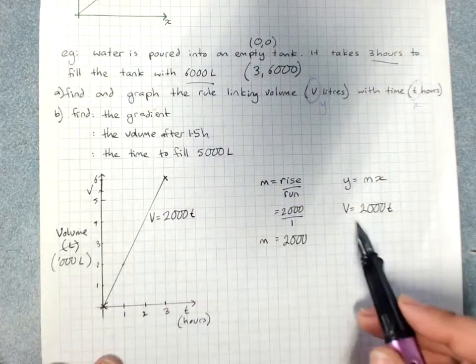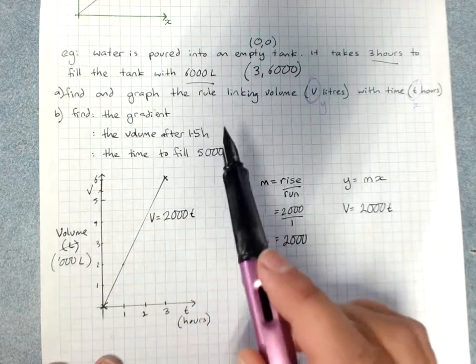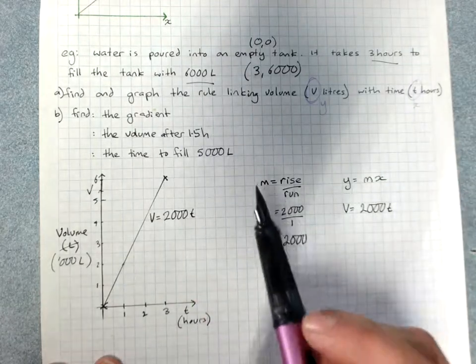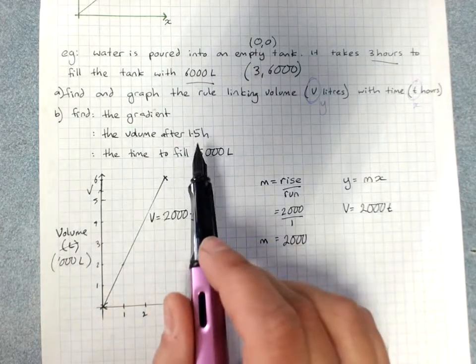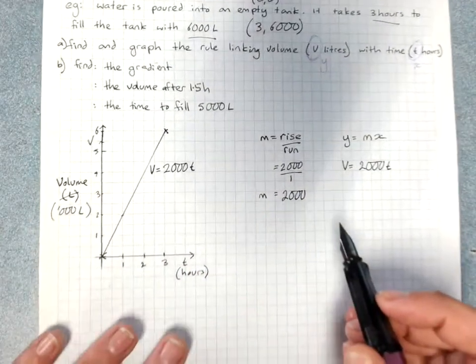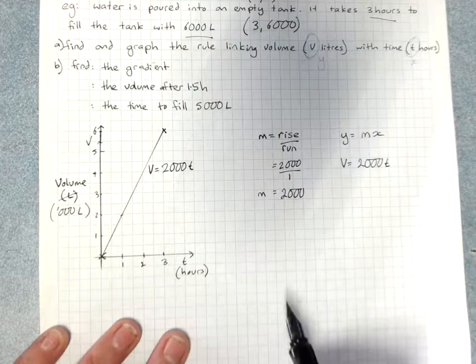The rate of change, therefore, is 2,000 liters per hour. Sorry about my phone buzzing there. Find the volume after 1.5 hours and the time to fill 5,000 liters.